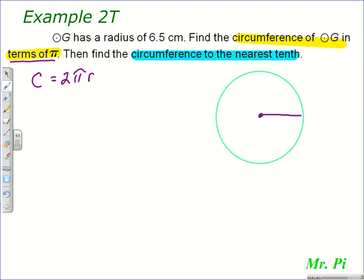So we're told in the problem, in the first sentence, that circle G has a radius of 6.5 centimeters. Draw yourself a circle, put in a radius, and now you can fill the numbers in. You don't even need to draw a diagram if you don't have to. So that will give us 2 times 6.5 centimeters times pi.